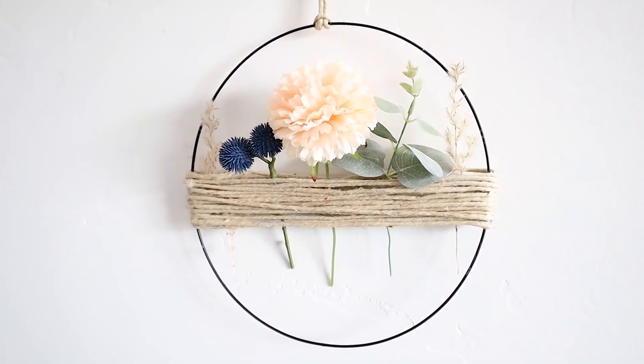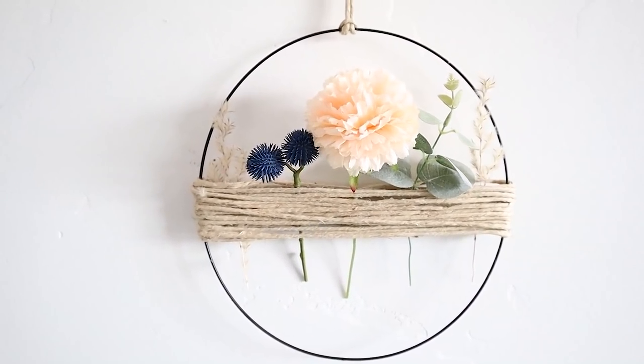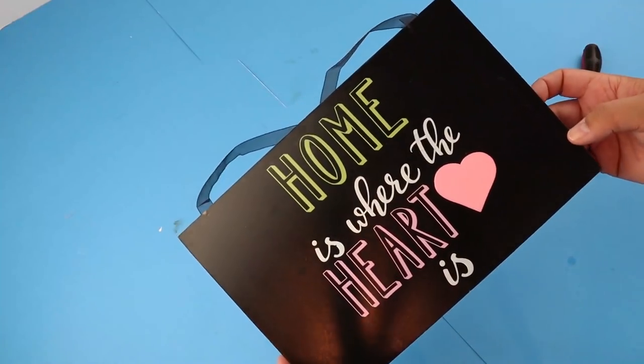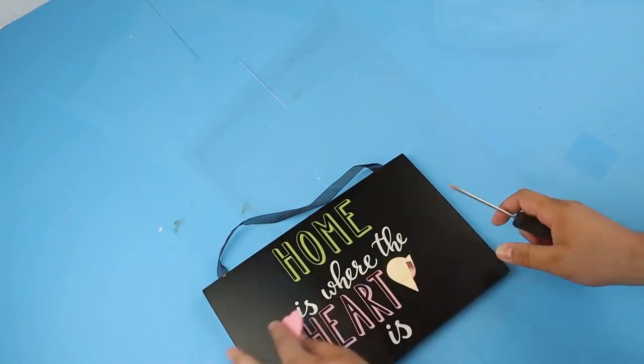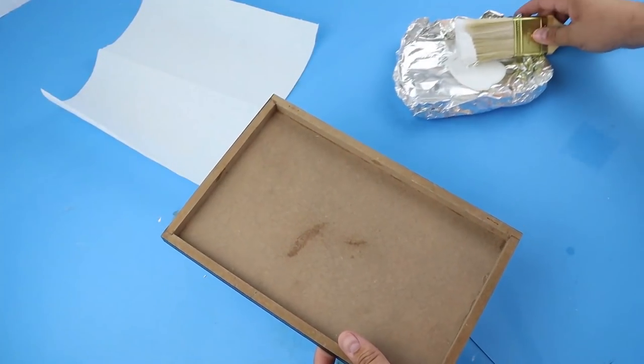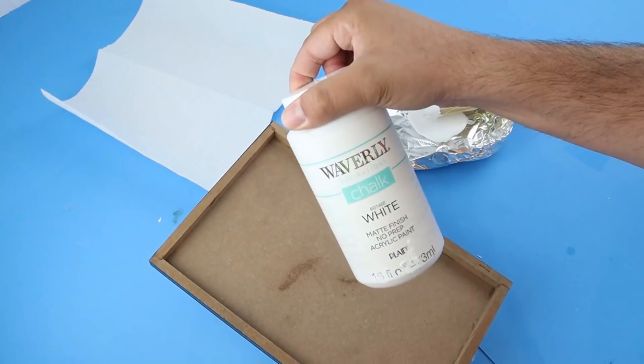For this project we're going to be creating a rainbow sign using this sign from Dollar Tree. So I removed that heart - you don't necessarily have to - and the ribbon.